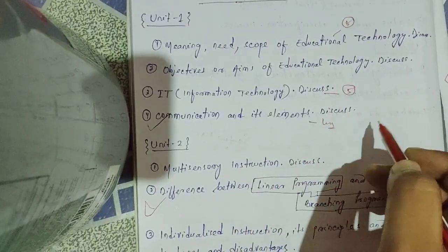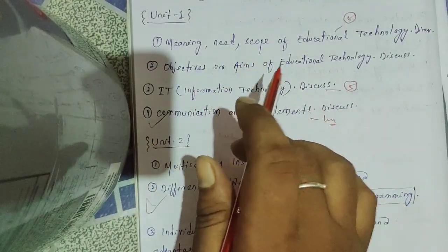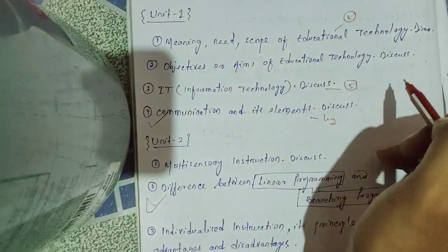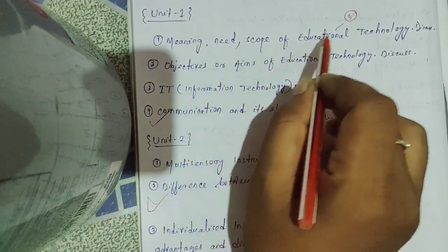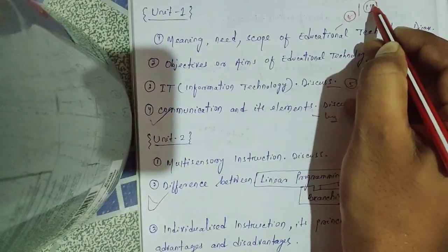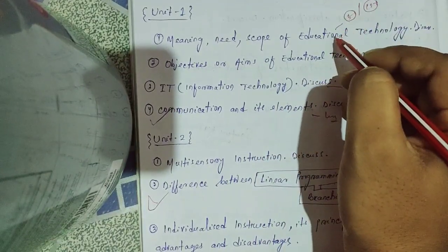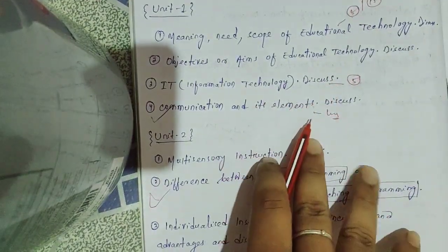Chapter Unit 1 - there are serious questions. Long questions you can do, short questions you can answer. Meaning, needs and scope can be answered as a long question of 15 marks. You can also prepare information technology and communication clearly.